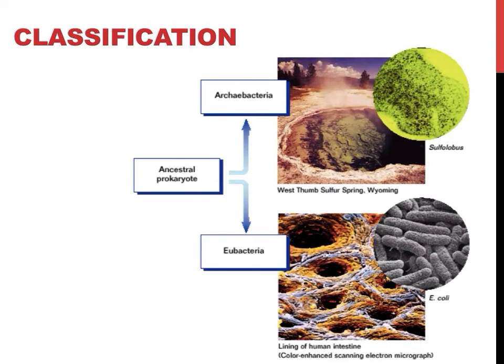As the introductory slide mentioned, there are two main groups of prokaryotes. These two major groups, two different domains of life, are archaea and eubacteria. Archaea, or archaebacteria, are shown on the top and are sometimes referred to as extremophiles, as these bacteria are usually found in very extreme conditions. An example of where this type of bacteria might be found is a sulfur spring in Wyoming. Archaebacteria often survive in places that no other organisms can. Eubacteria are the prokaryotes most frequently encountered by humans, covering virtually every organism and surface on the planet.